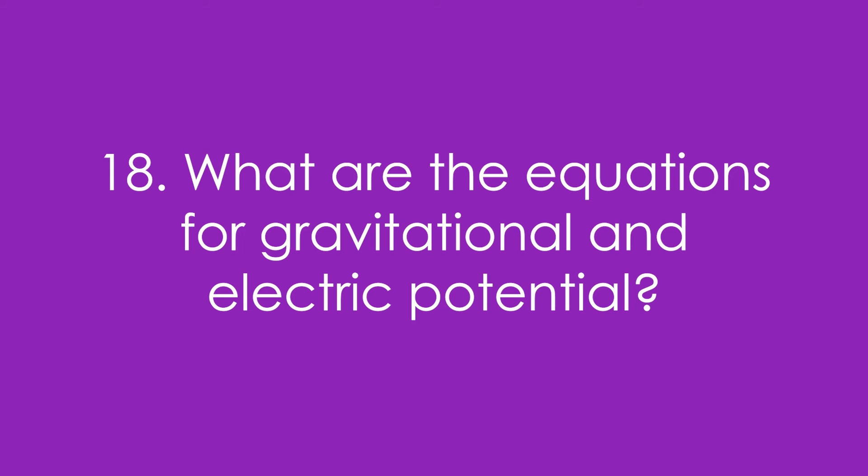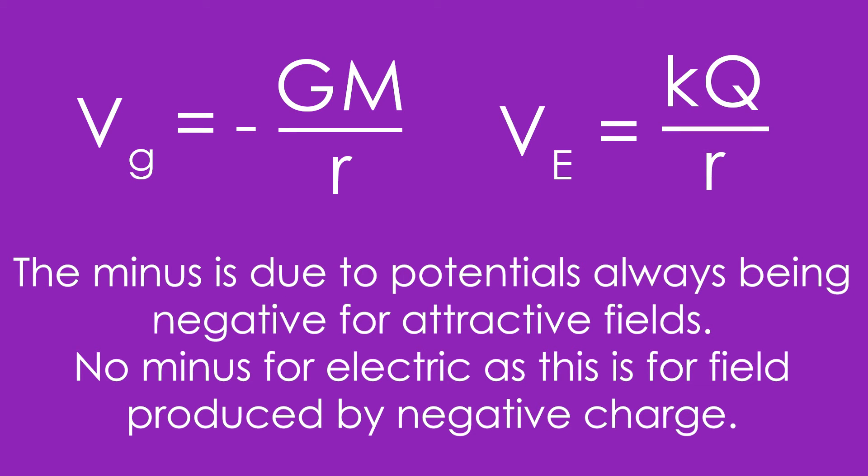Eighteen, what are the equations for gravitational and electric potential? V for gravitational fields is minus Gm over r. And for electric fields, it's just kq over r. Now, it's a minus on the left because potentials are always negative for an attractive field. However, we don't have a minus for the electric field one because this field is being produced by a negative charge if it's going to be attractive to a positive charge.